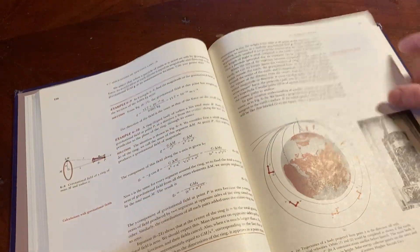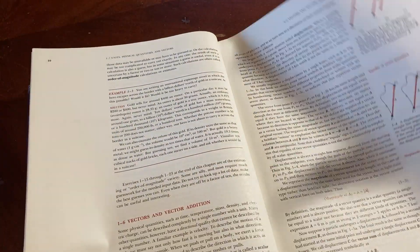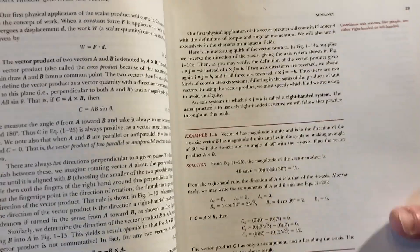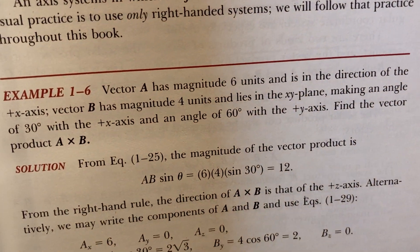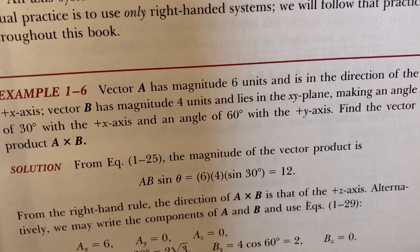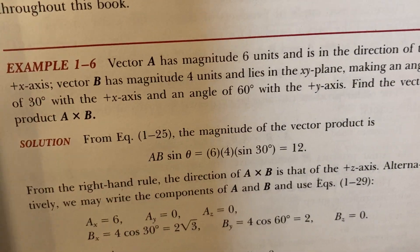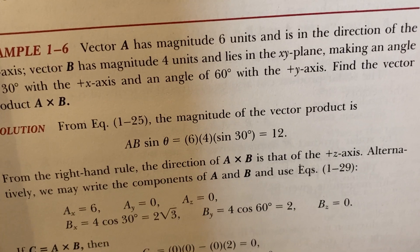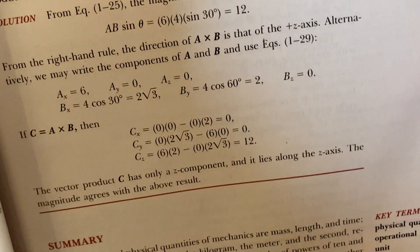Let's go to some of the contents of this book and let's look at some physics. What do we have here? Some mathematics. Vector A has magnitude 6 units and is in the direction of the x-axis, and B has magnitude 4 units and lies in the x-y plane, making an angle of 30 degrees with the x-axis. Find the vector product A cross B. From equation 1-2-5, the magnitude of the vector product is... From the right-hand rule. Nice, right? So they go through it there. It's pretty cool.